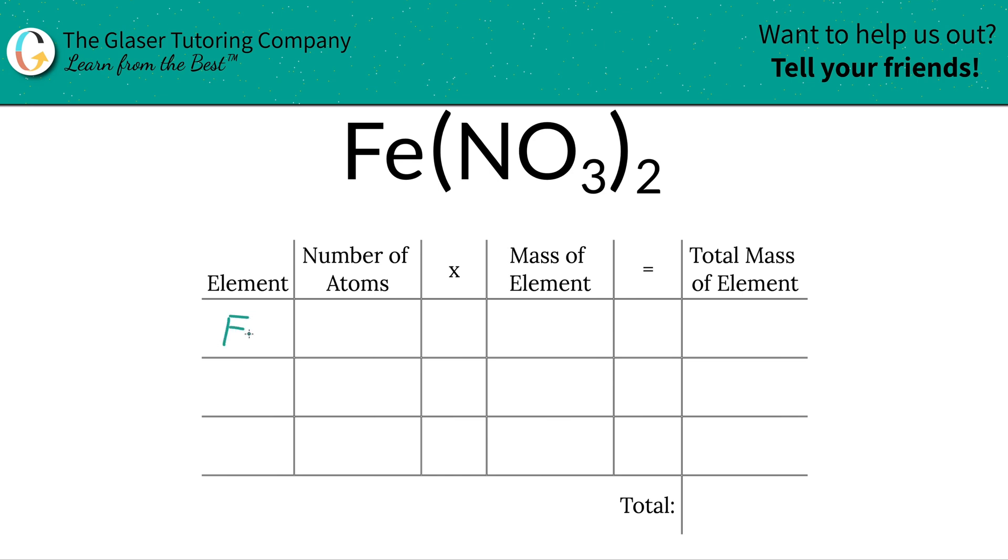the elements I see in the compound. So I see iron Fe, I see nitrogen N, and I see oxygen O. Then we're going to do the number of atoms. We're going to write them down. That's where the subscripts